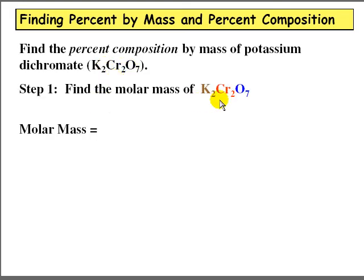The first thing we do is we find the molar mass. We have the periodic table so we can look up the atomic masses of the elements.